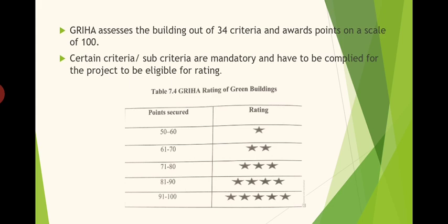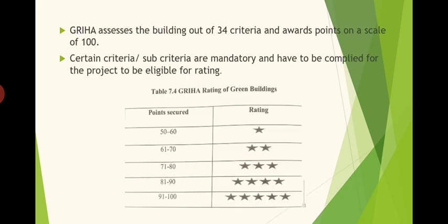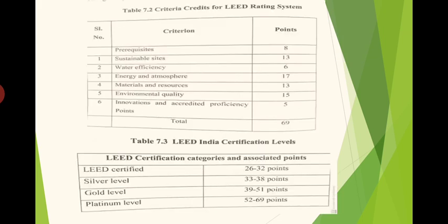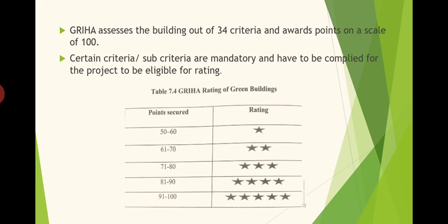Coming to GRIHA — Green Rating for Integrated Habitat Assessment, developed by TERI (The Energy and Resources Institute) — there are slight differences from LEED. LEED certifies out of 69 points across about 6–7 criteria, while GRIHA assesses buildings out of 100 points across 34 criteria and sub-criteria. Rating levels follow a star system: 50–60 points is one star, and 90 and above earns the maximum of five stars.